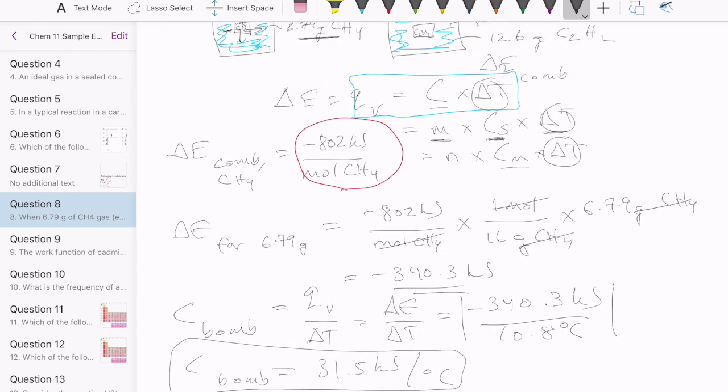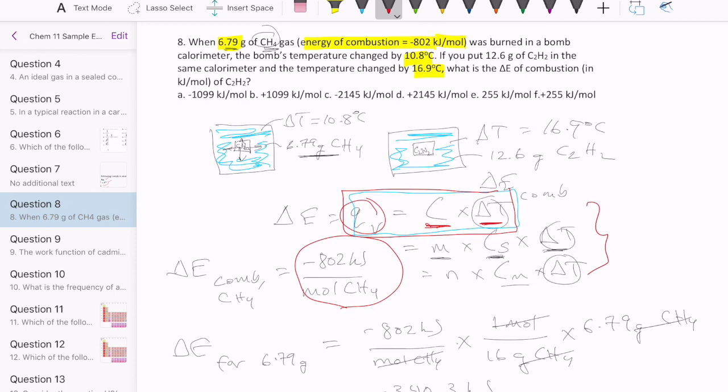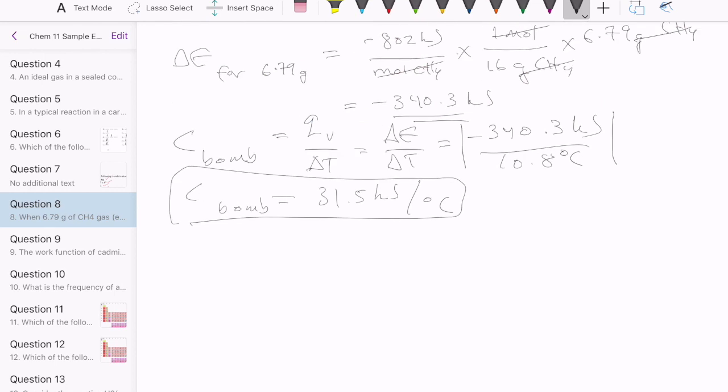Once we have this, then it becomes relatively easy to see which of the three heat equations can be used to calculate our delta E in this case. The one that works best, of course, is this one right here, because we already know the C. We can just use the delta T to help us find the Q sub V for the second substance, which is C2H2. So that's what we'll do in this case. We would find the Q sub V for C2H2. And to do that, we just take the bomb heat capacity times its delta T for C2H2 in this case. And that would be 31.5 kilojoules per degree Celsius times 16.9 degrees Celsius.